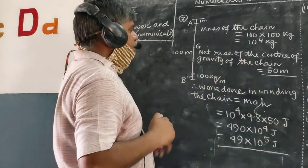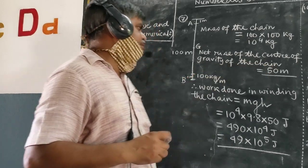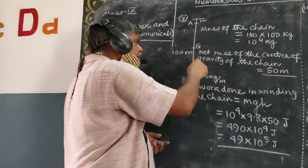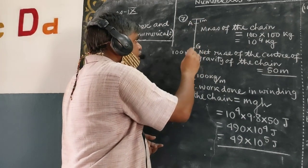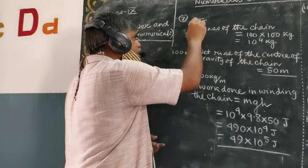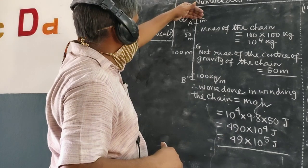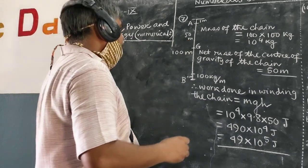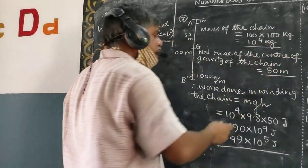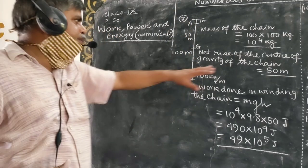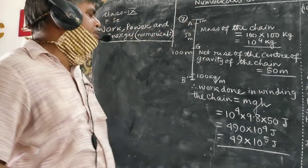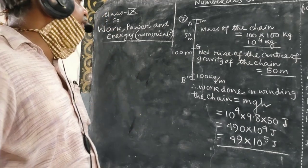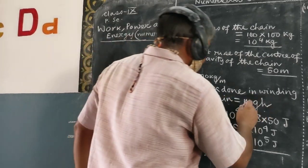The net rise is the rise of the center of gravity of the chain. For this uniform chain, its center of gravity lies at the midpoint of the chain at point G. That means it was 50 meters below the point of suspension, and it is being taken to the top, so it is suffering a rise of 50 meters. Therefore, we can consider as if the total mass of 10 to the power of 4 kg is being raised 50 meters against the force of gravity.